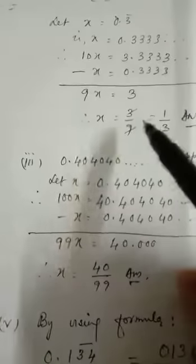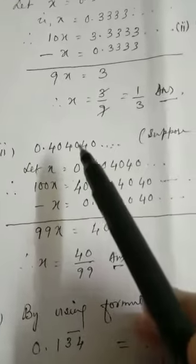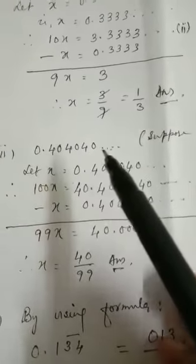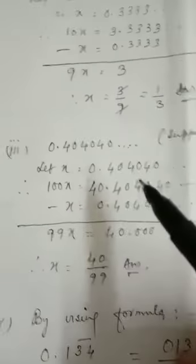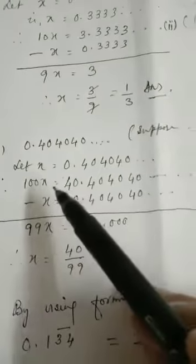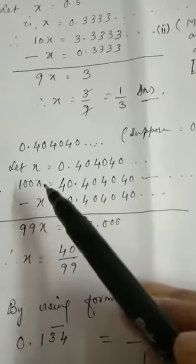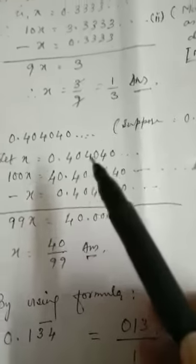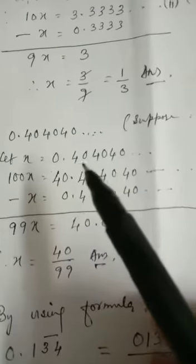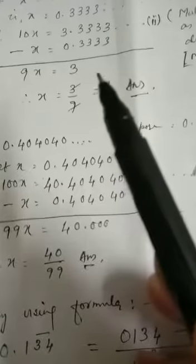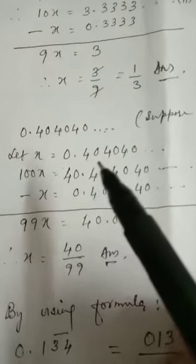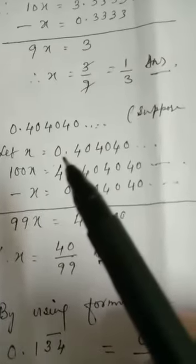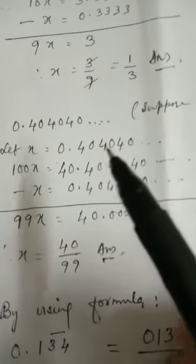Now next sum number 3: you have to change 0.404040 into the form p by q. Again, same way, suppose x is equal to 0.404040. You find here two numbers are repeating. In the first case there was only one number. In this second one you have two numbers, 4 and 0 repeating. So you have to bring the decimal after two places, since two numbers are repeating.